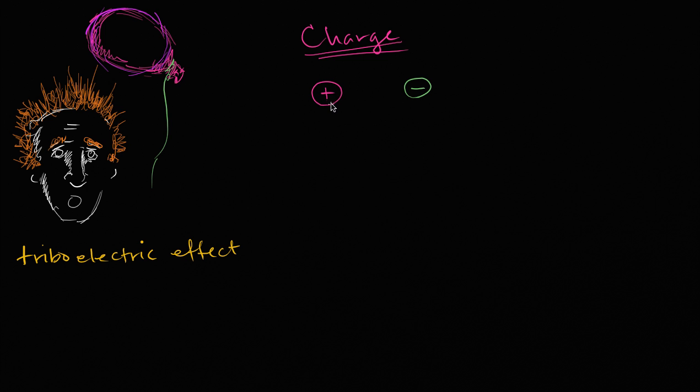And so if we say something has a positive charge and something else has a negative charge, then in our framework that we're setting up, these two things are going to attract. So opposite charges are going to attract, while like charges are going to repel.